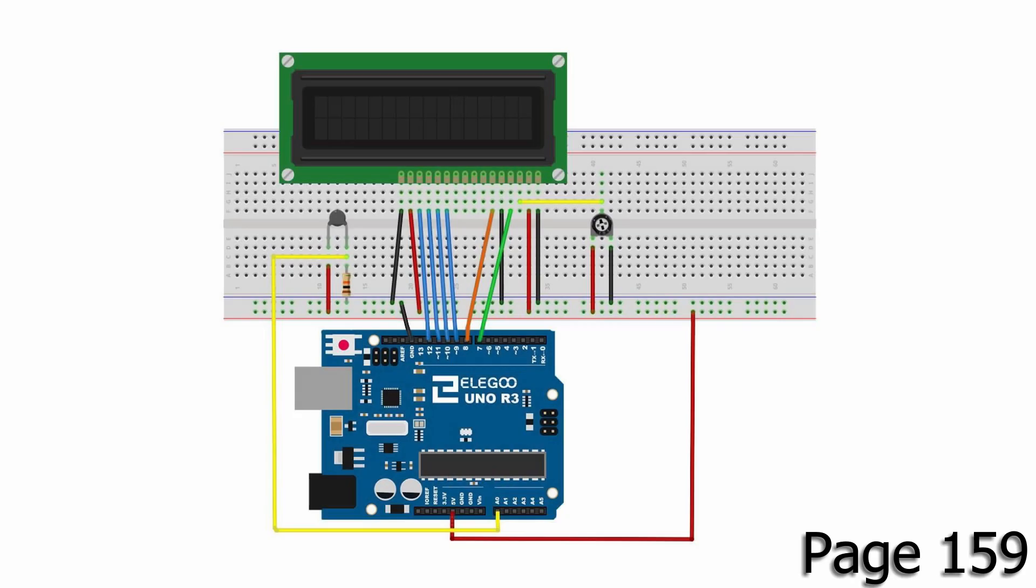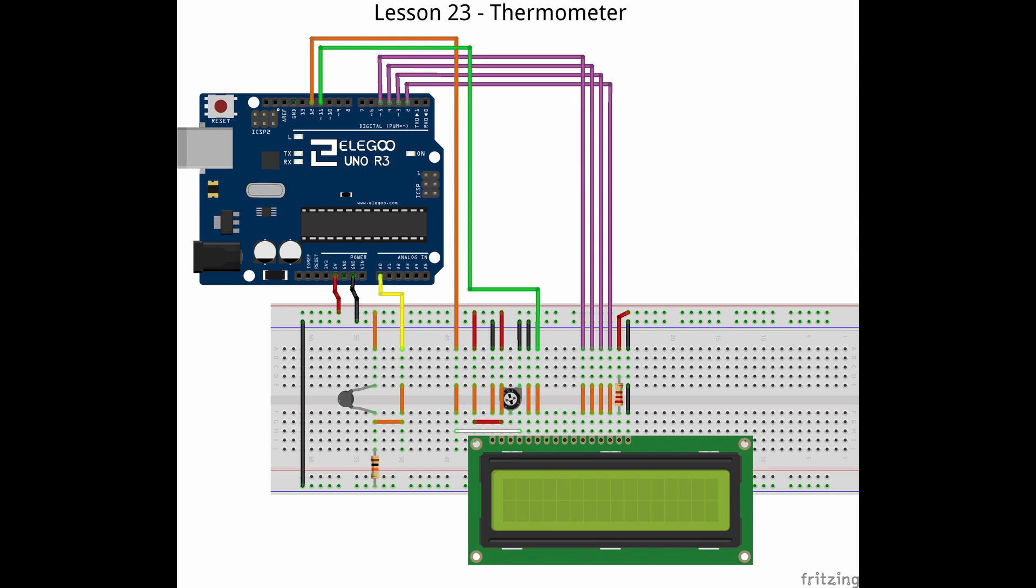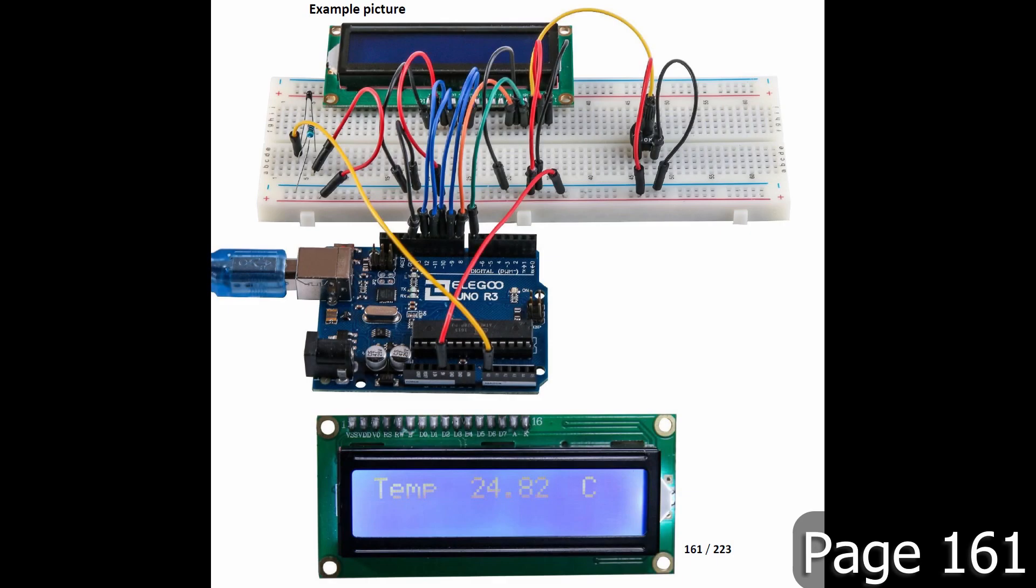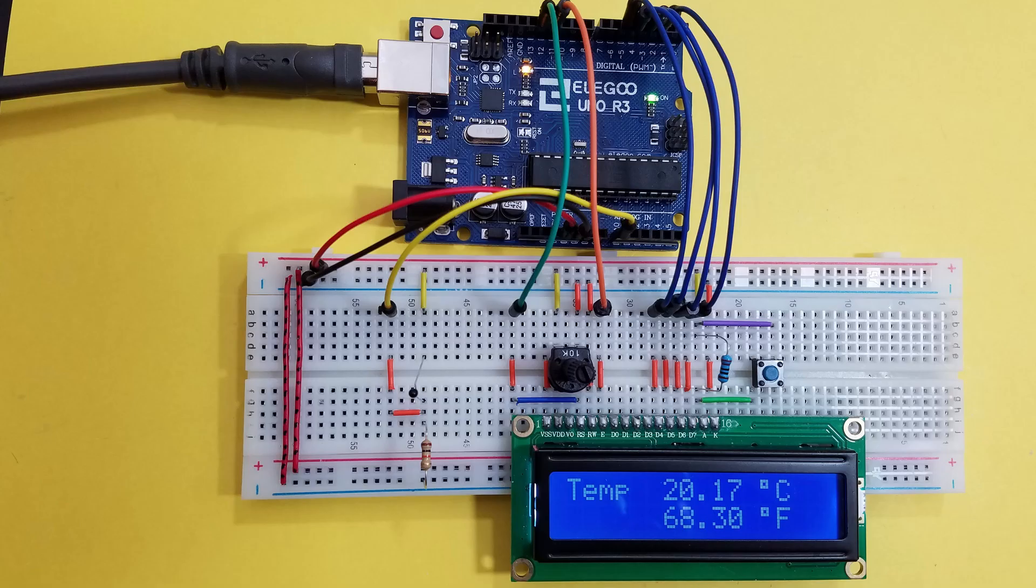On page 159 you'll see the wiring diagram and here's my revised layout. Here you can see the series connected thermistor and 10k ohm resistor. Between the two the voltage level will be measured by the pin A0. On page 161 there's a photo and here's my photo. The little pre-made jumper wires help keep things kind of neat and tidy. Okay let's move on to the code.